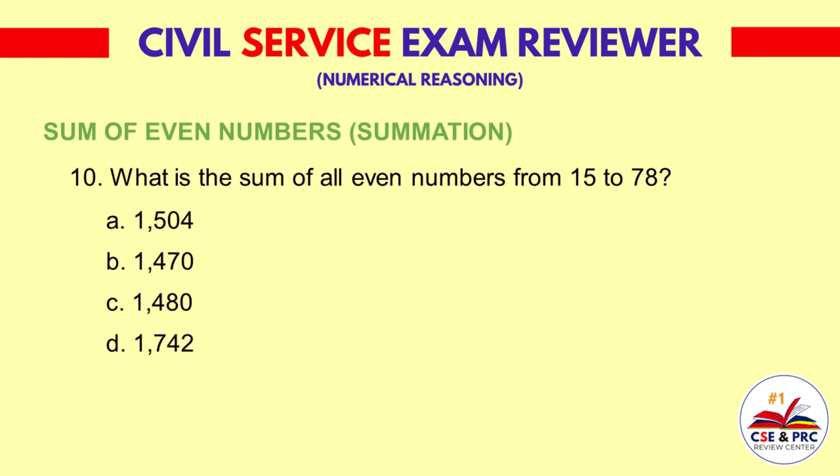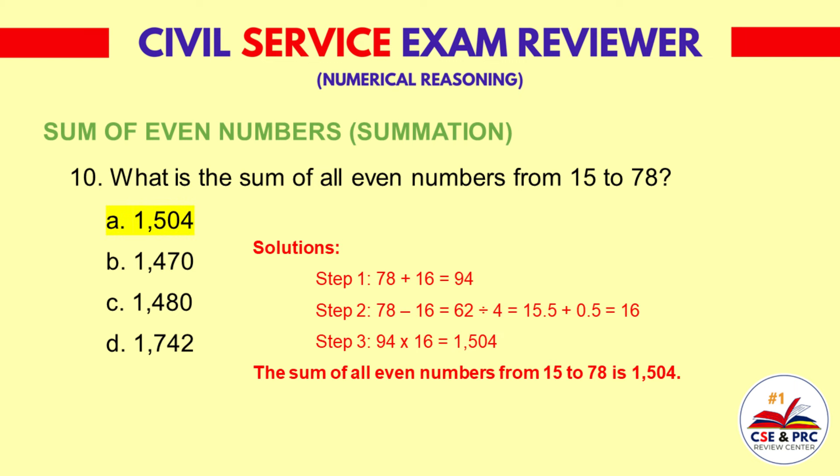Question 10: What is the sum of all even numbers from 15 to 78? a. 1,504  b. 1,470  c. 1,480  d. 1,742. The answer is a. 1,504.